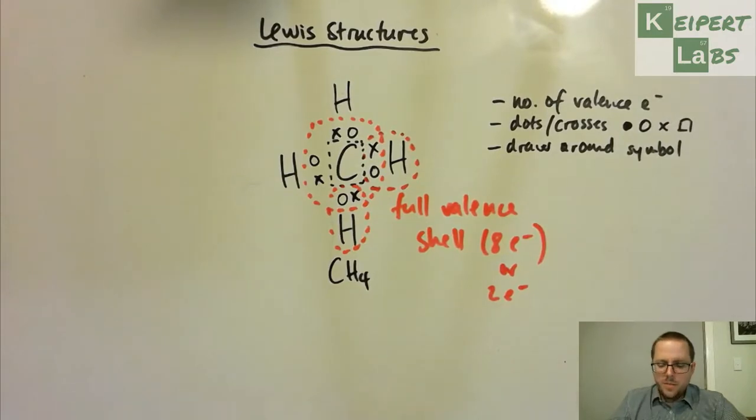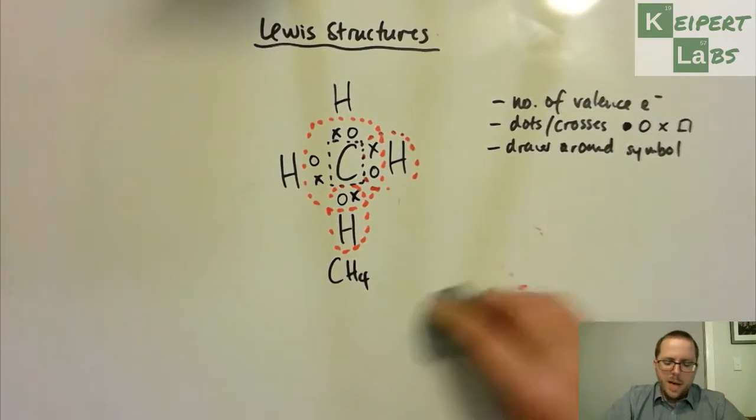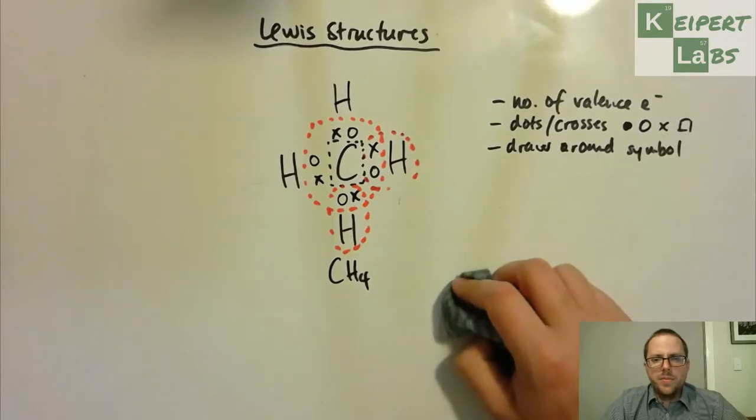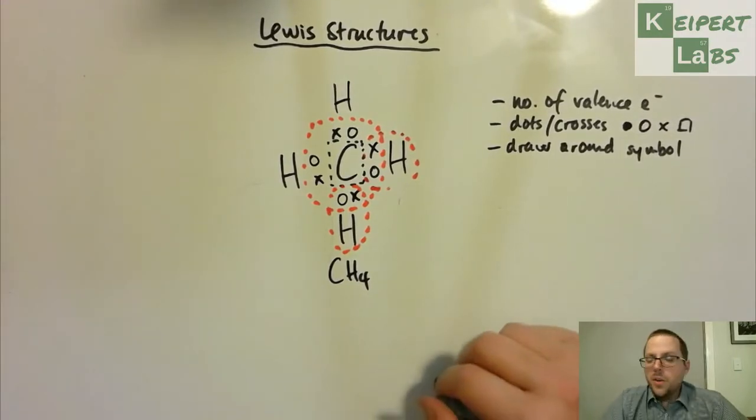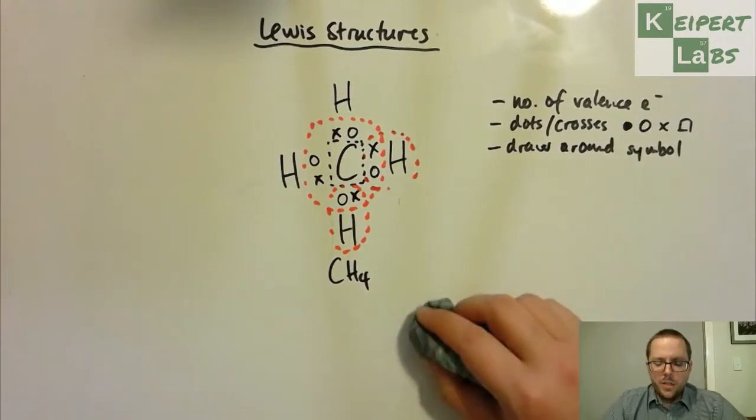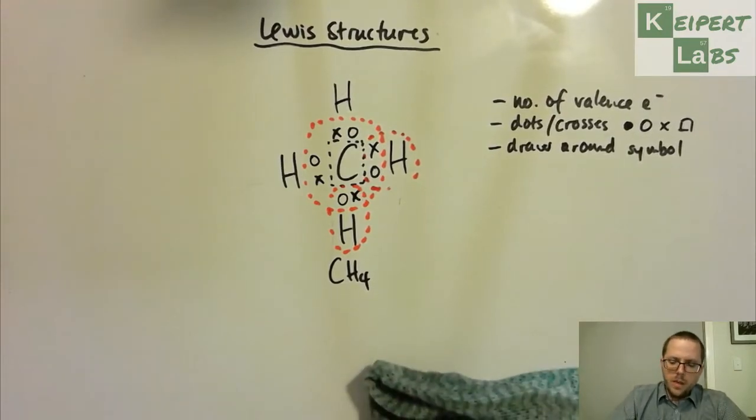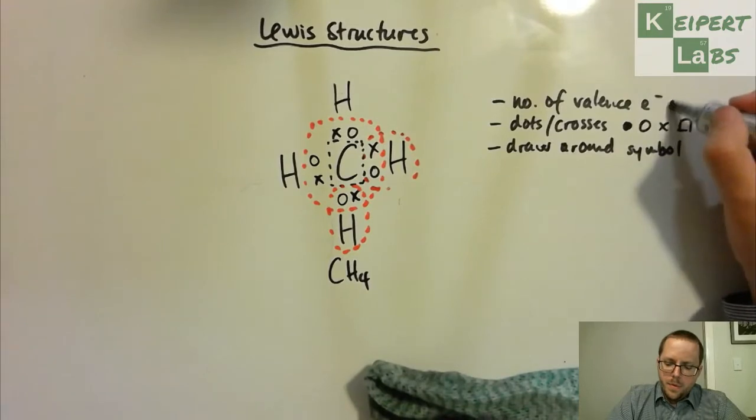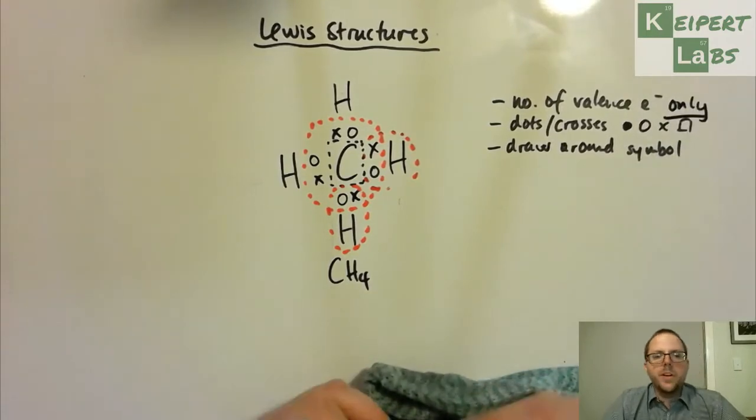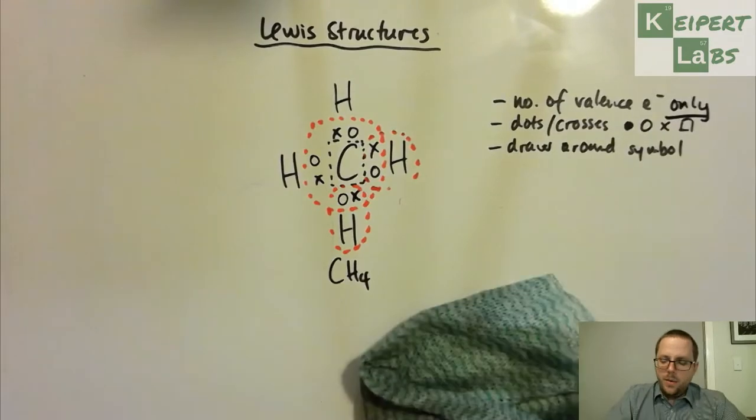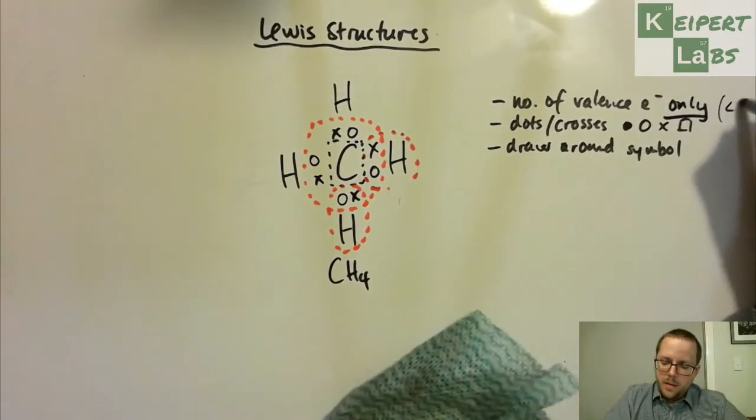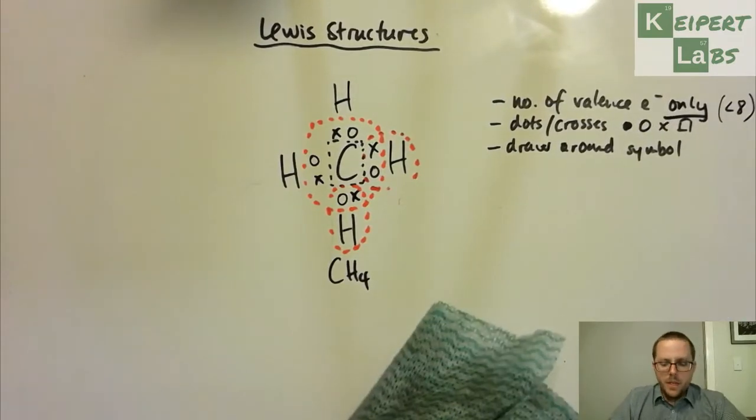Now, just be mindful that a carbon has more electrons than just the four valence ones. It has two others in its inside shell that we don't draw in a Lewis structure. We only show valence electrons. So that is, it will be eight or less.